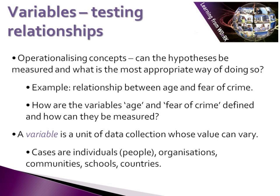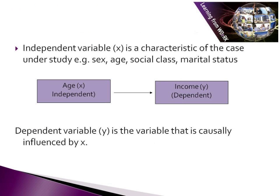What does a variable mean? A variable is simply an attribute on which each case varies. Cases are of course people — we go and interview and survey people — but cases can actually be pretty much anything: organisations, businesses, communities, schools, even countries. When using a hypothesis in research and trying to test for a relationship between variables, variables need to be thought of in terms of independent and dependent variables. The variable that has the causal impact is the independent variable, and the variable that feels the effect is the dependent variable. In the example shown here, whether age has an effect on income: age is the independent variable and income is the dependent variable. The knowledge of which variables are independent and dependent becomes of real importance when you come to analyse your data.